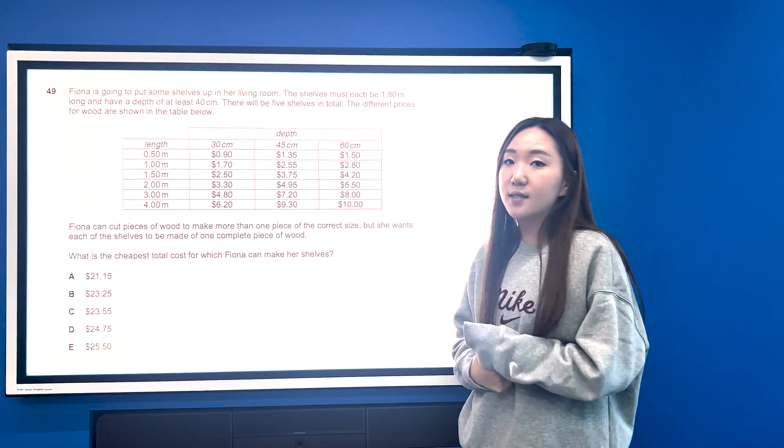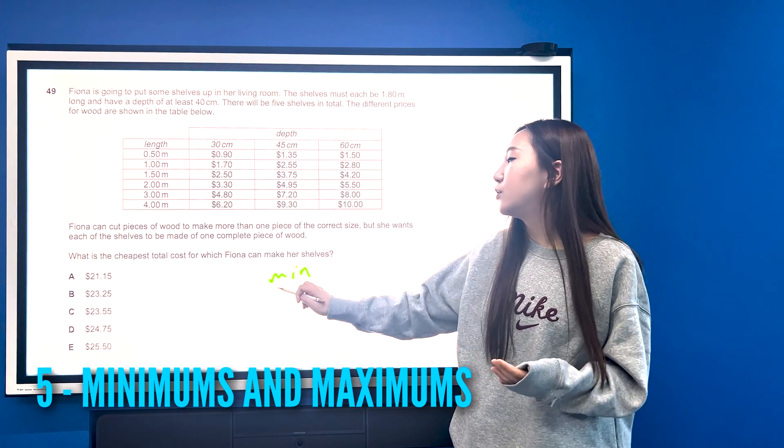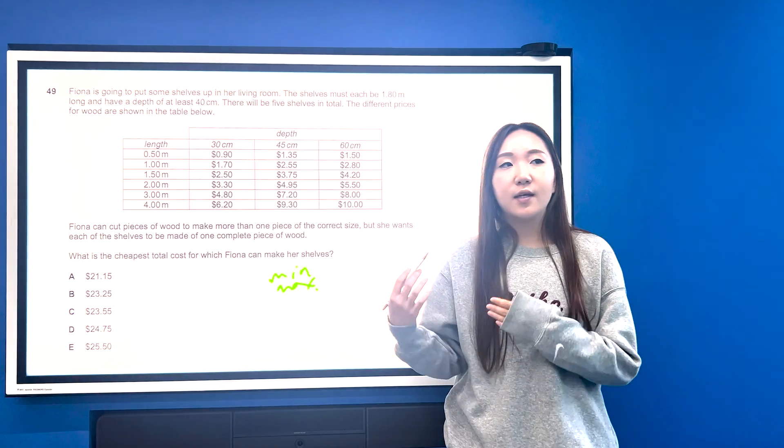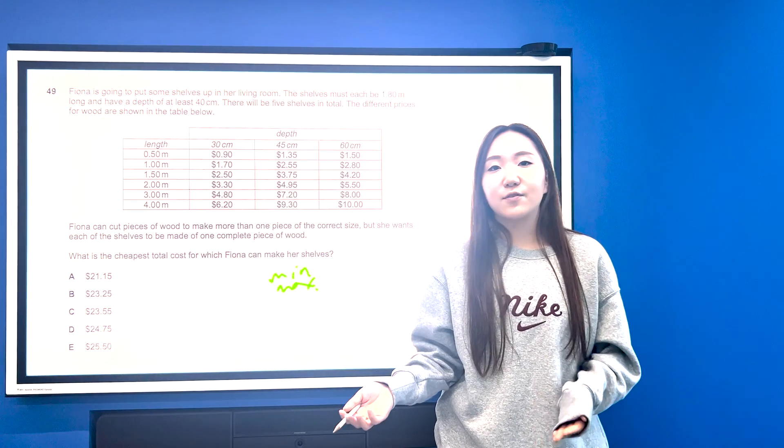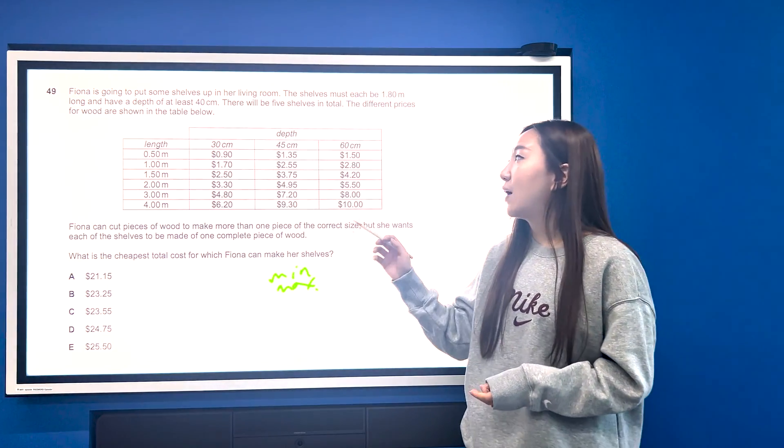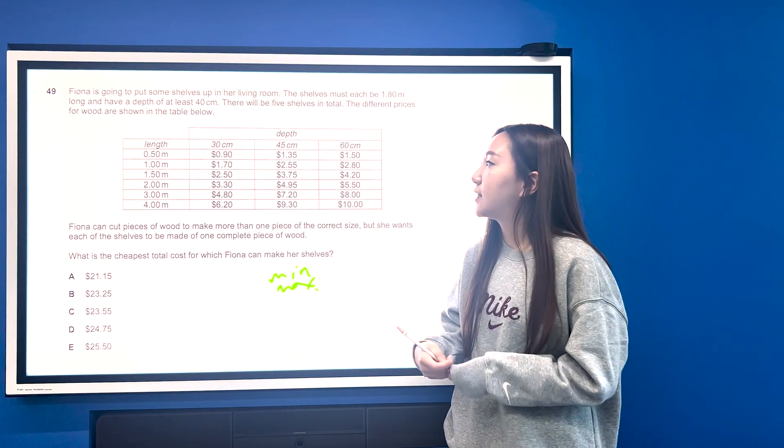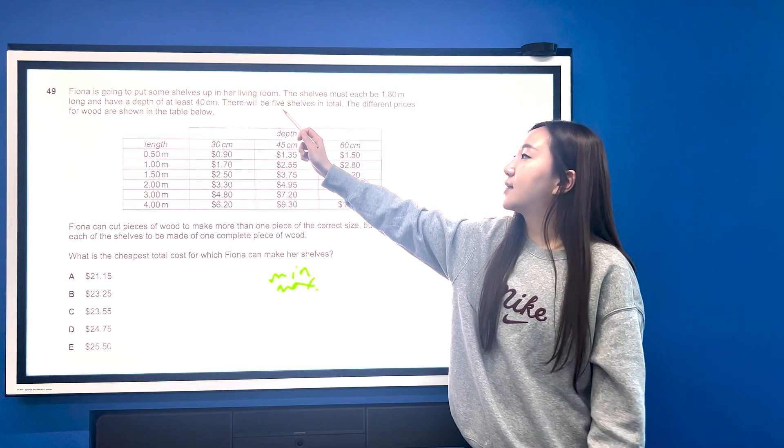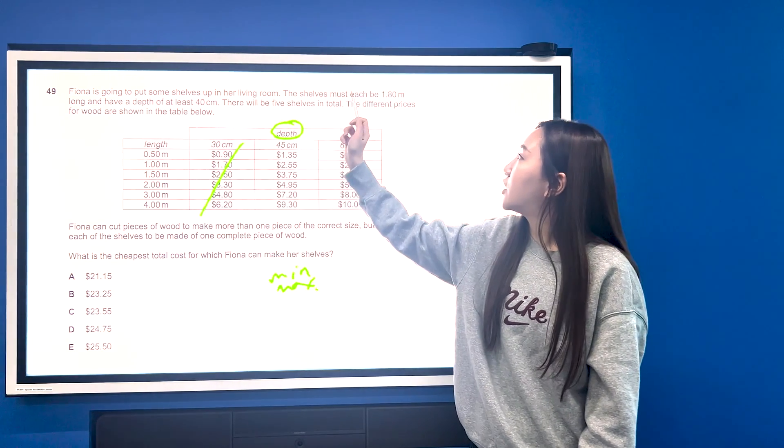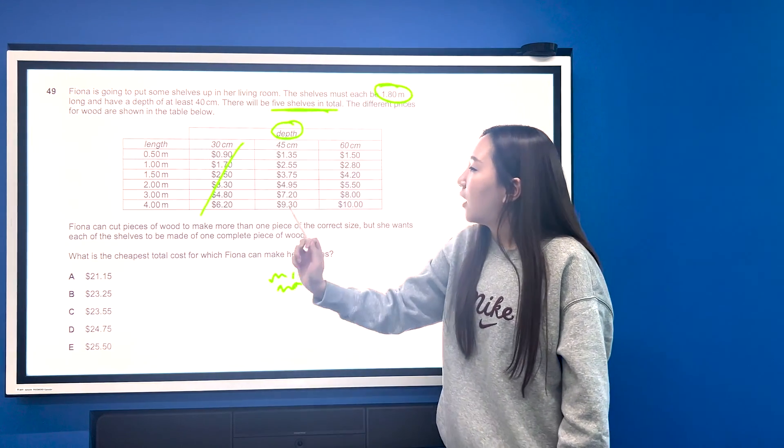All right, so the fifth type of question that you may be asked is to find the cheapest or the most expensive, basically minimums and maximums using materials. So materials could be pieces of ribbon, it could be lengths of wood, it could be different bags of soil, whatever it is. It's usually kilograms or centimeters, and they usually give you a fair amount of information. So the things to watch out for, first of all let's work out what the conditions are that we have to find. So we need in this case a depth of at least 40 centimeters. Depth is given here. So we're going to knock out this column here, and the shelves have to be 1.8 meters long and we need five of them.